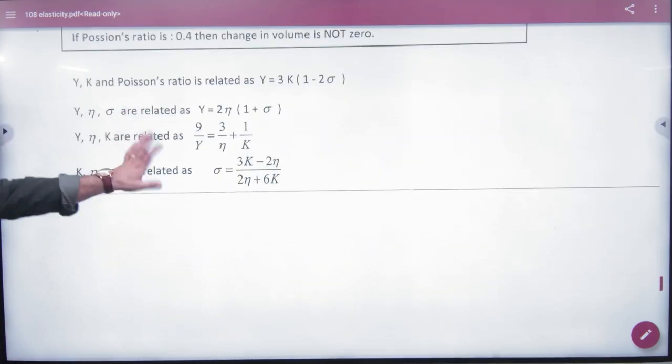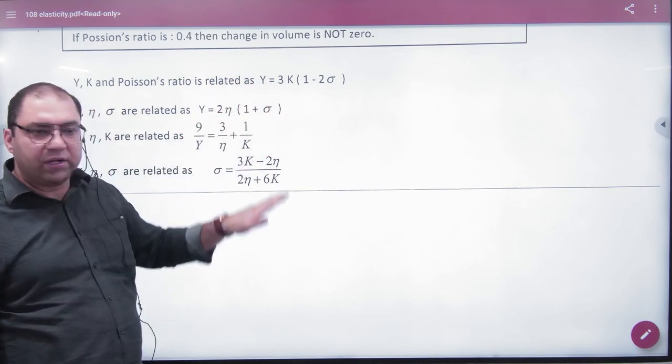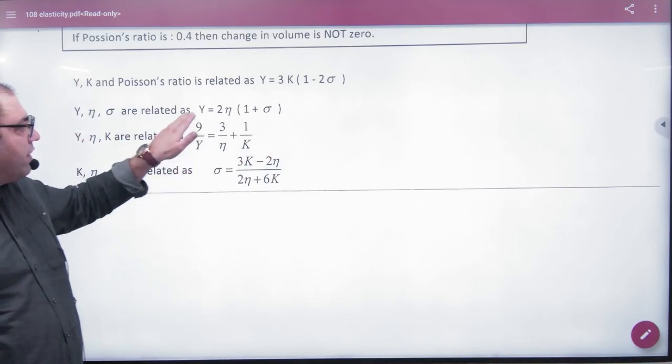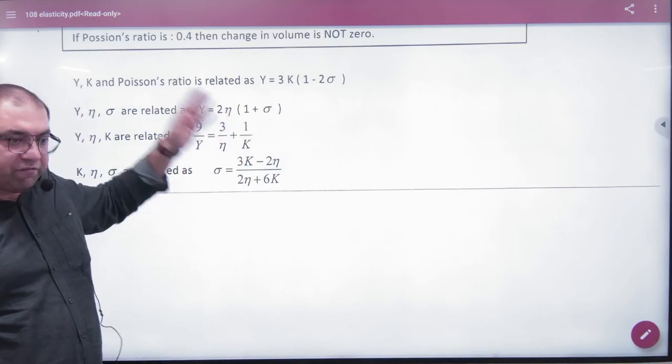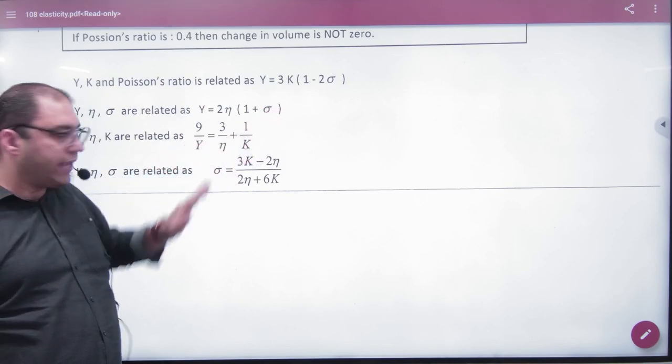And note these four formulas in which you have a relation given to the Young's Modulus, Bulk Modulus and Poisson Ratio, which is given to the coefficient Modulus of Rigidity, Sigma, Y, Eta, K and Sigma.